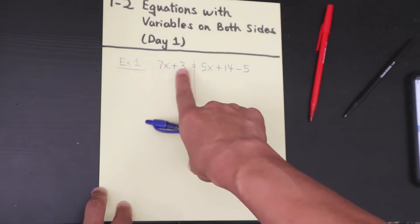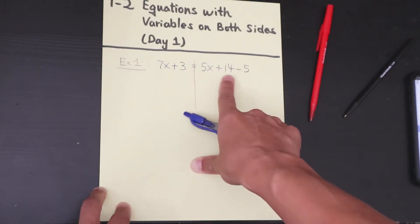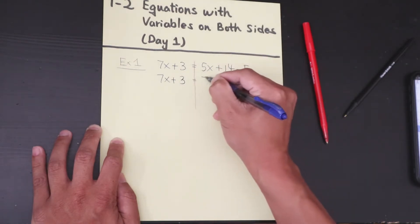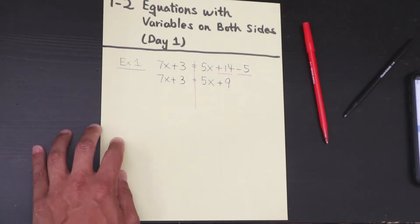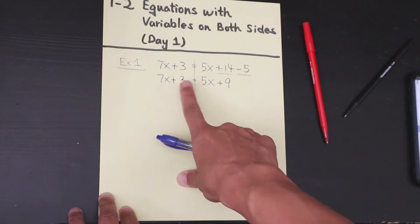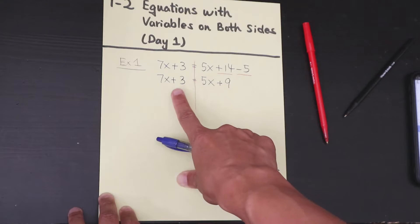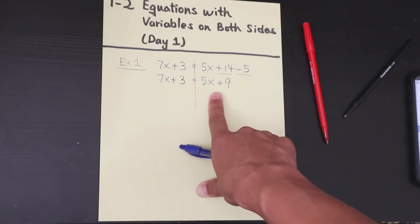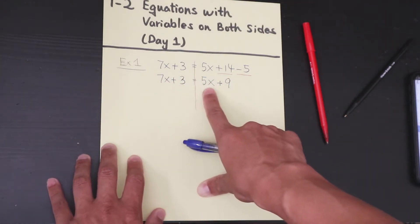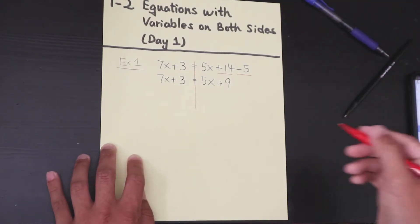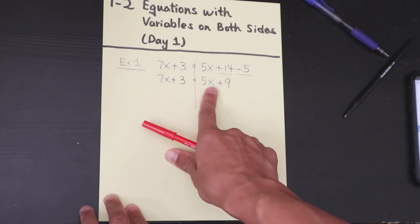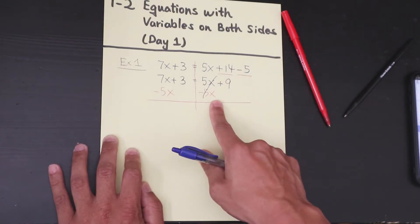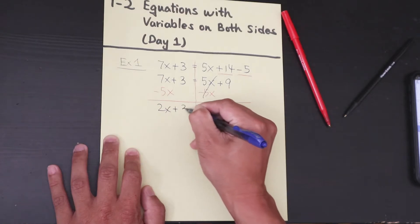On the left side, 7x plus 3 has no like terms. On the right side, positive 14 and negative 5 are like terms, so combine them: 14 minus 5 is 9. So the right side becomes 5x plus 9. You notice there are x-terms on both sides — 7x and 5x. You're able to add or subtract terms on both sides. Subtract the smaller coefficient, which is 5x, from both sides. 7x minus 5x leaves 2x plus 3 equals 9.